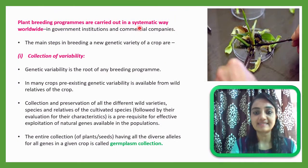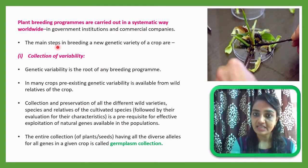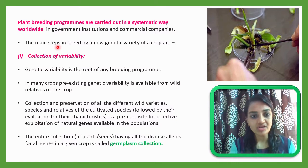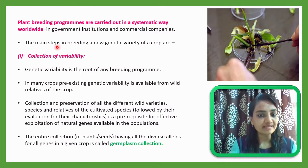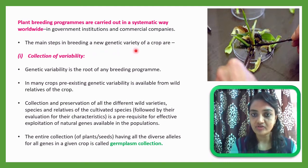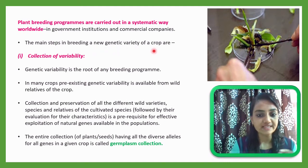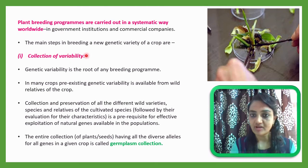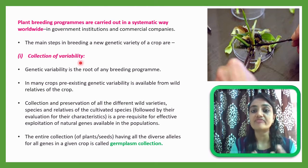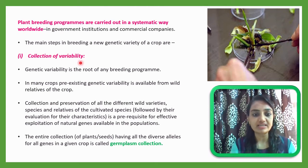Plant breeding programs are carried out in a systematic way worldwide, whether in governmental institutes or commercial companies. The main steps in breeding a new genetic variety of crop plants are as follows. The first step in any breeding process is the collection of variability.